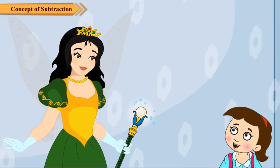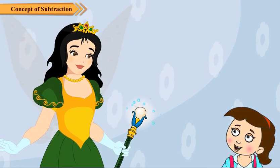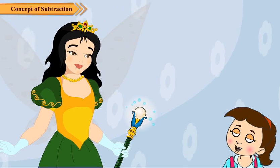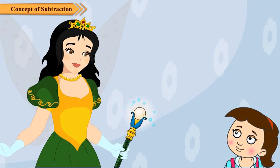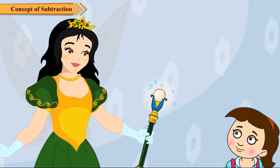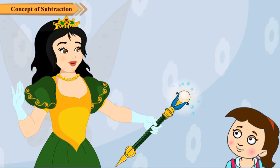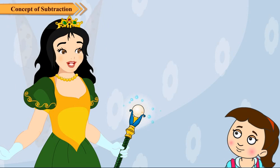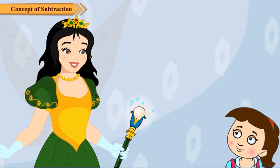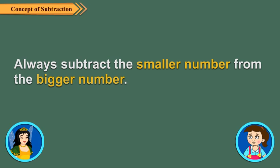What does subtraction sentence mean? Can we subtract two from seven? We can only take away a small part from a bigger part. So in subtraction, we always subtract the smaller number from the bigger number.